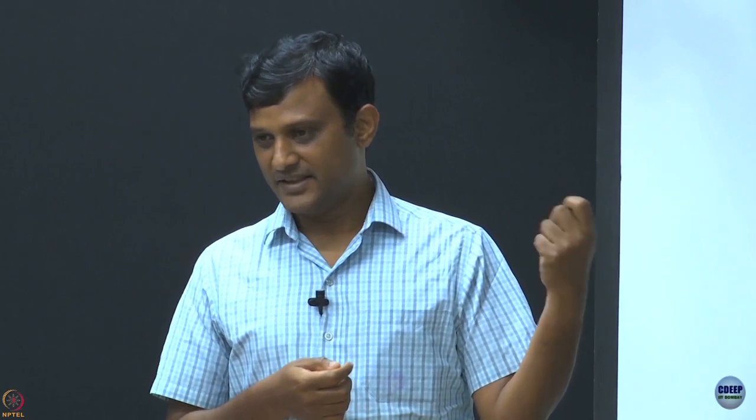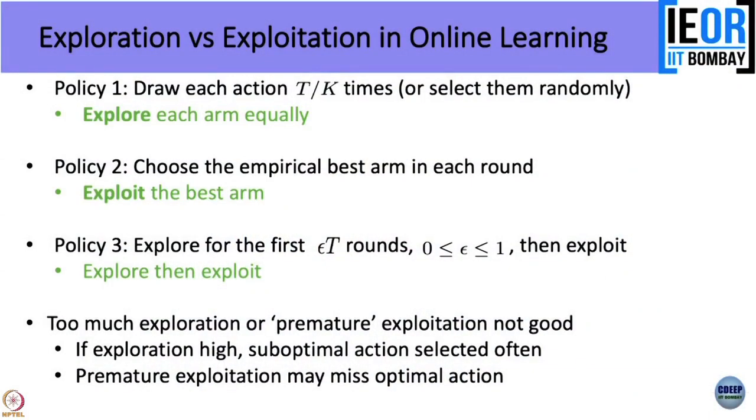Let us say the Bernoulli case. Every time I play a particular action I get independent observations — all of you know what IID means. If the observations are independent and binary, you can just count how many times you observed one, take the average, and that gives you the empirical mean value. So out of 100 rounds, based on your observations you can compute empirical means for each arm.